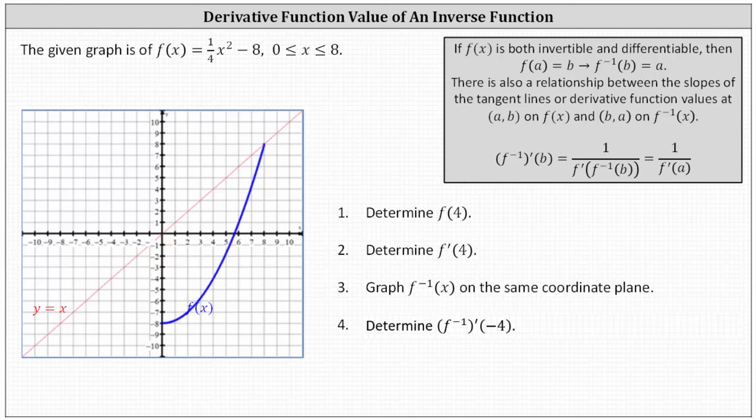The graph below in blue is f of x equals one-fourth x squared minus 8, only graphed over the closed interval from 0 to 8, so that f of x is one-to-one.